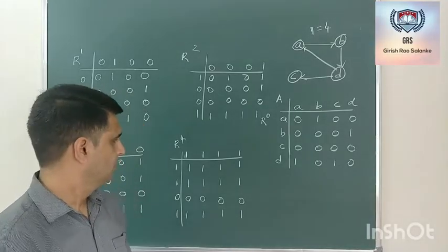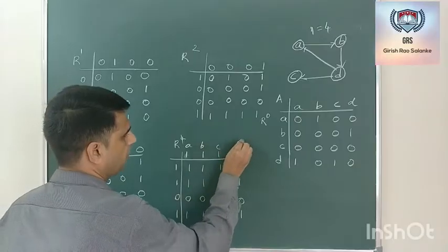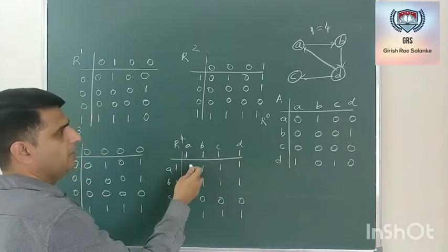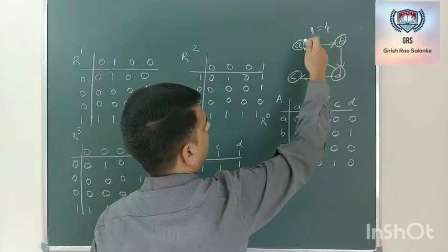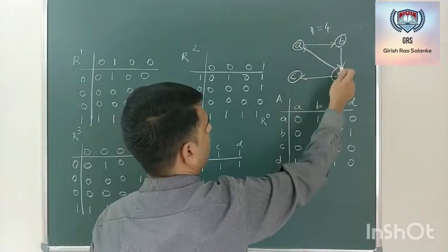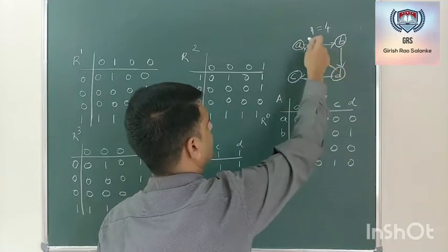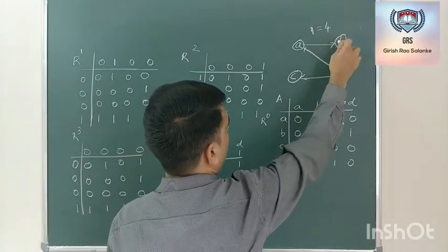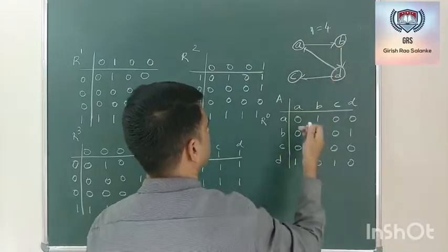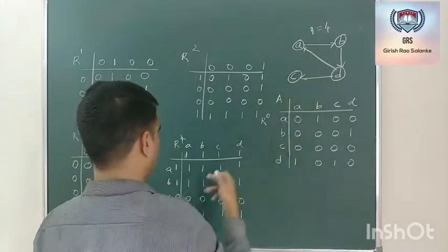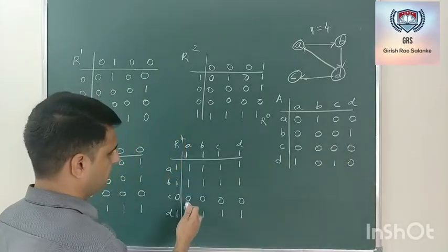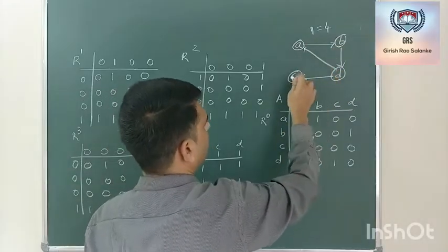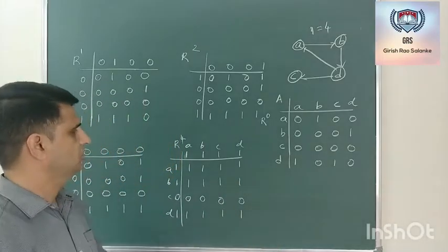So this is my final answer. Marking vertices as A, B, C, D: from A, you can go to all vertices and even come back to A — A to B, A to C, A to D, and A to A are all reachable. From B: B to B, B to A, B to C, and B to D are all reachable. From C, as there are no outgoing edges, you can't go to any other vertex — all values are 0. From D: you can go to A, B, C, and come back to D. This is the final output matrix.